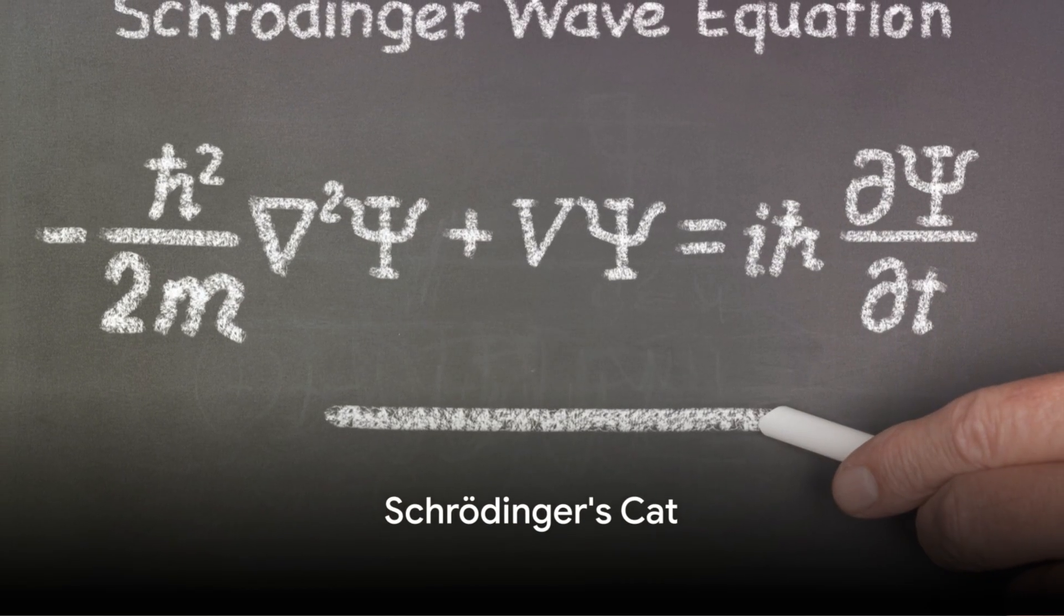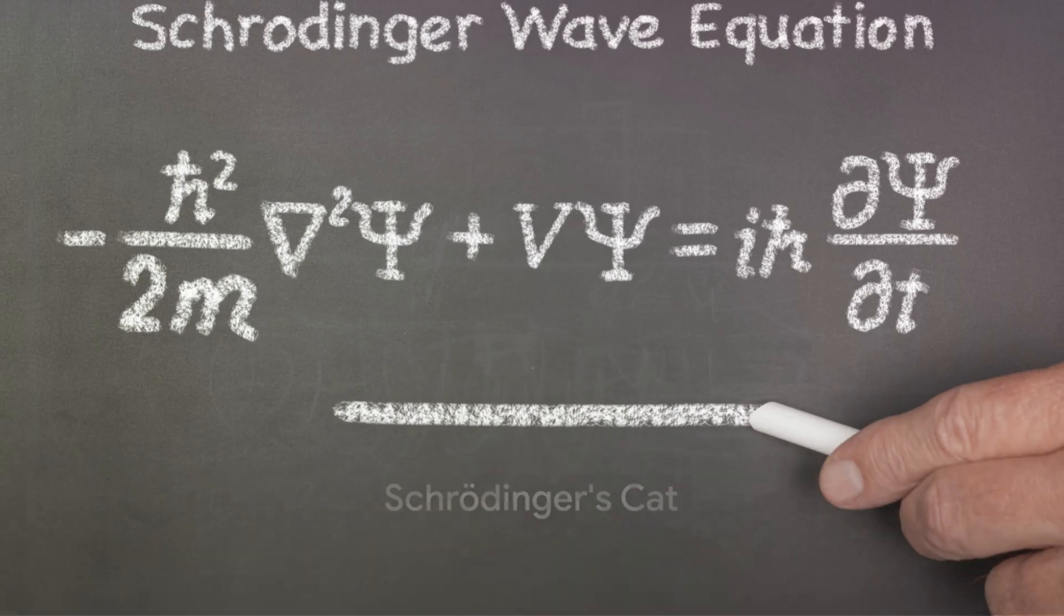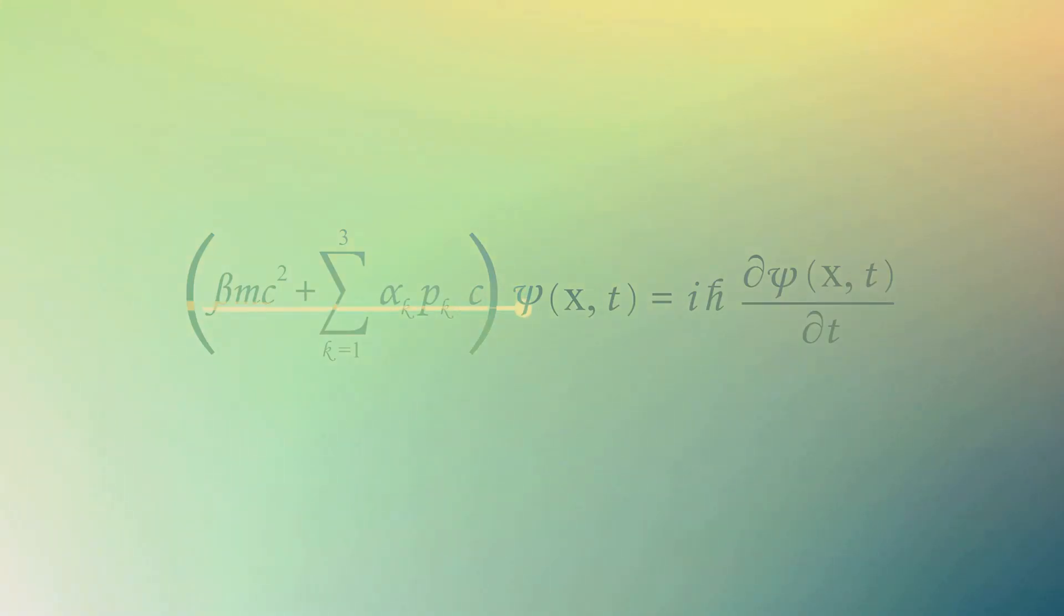Ever heard of Schrödinger's cat? It's the feline that's both alive and dead at the same time. Now, before you start scratching your head, let's delve a bit deeper into this perplexing thought experiment conceived by the Austrian physicist Erwin Schrödinger in the early 20th century.